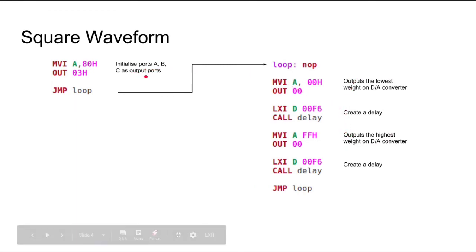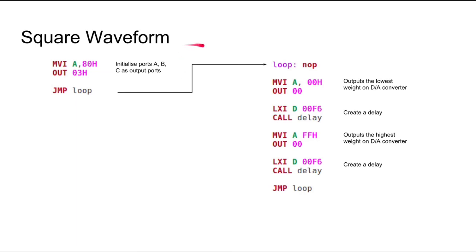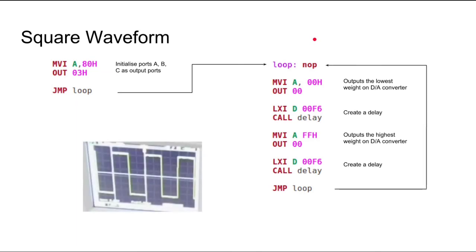The output will be like this: output the lowest value on the accumulator, then generated delay, then output the highest value, then generated delay — lowest, delay, highest, delay — which creates a square wave. Here is the output on the oscilloscope.